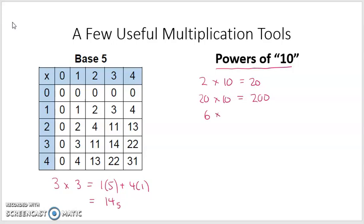How about 6 times 3? Well that's 18. And 6 times 30? That's going to be 6 times 3 is 18, plus a 0, which is 180. So you can use this same idea about multiplying powers of 10 in other bases.